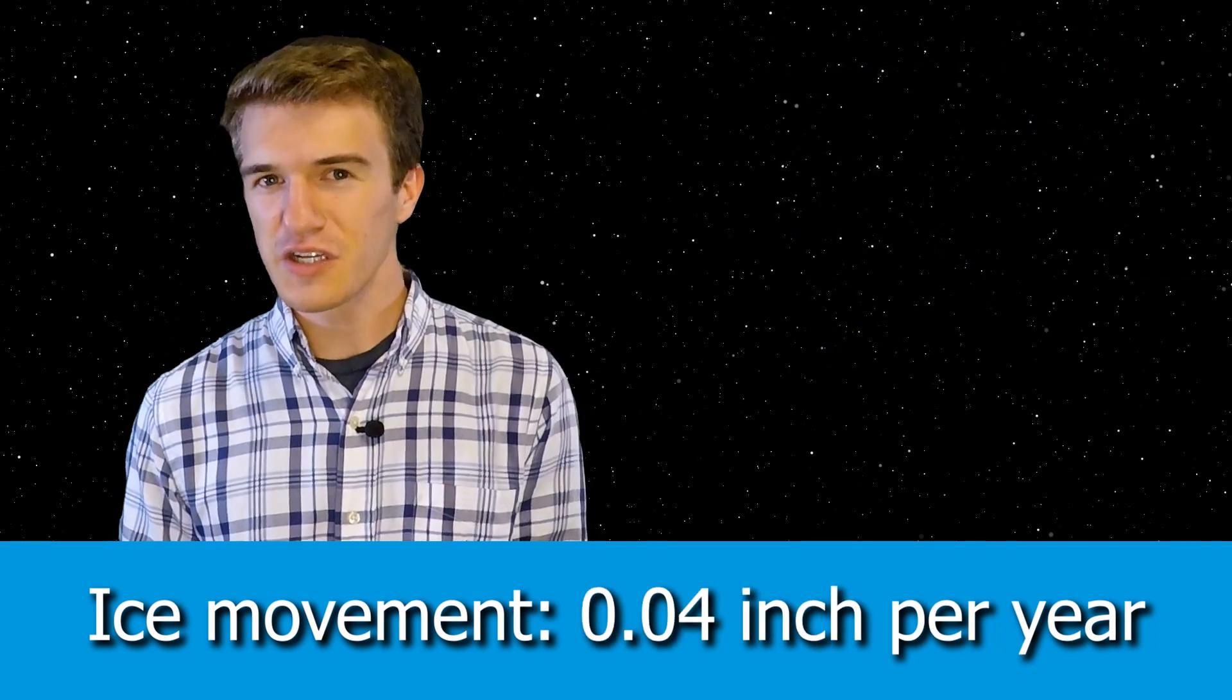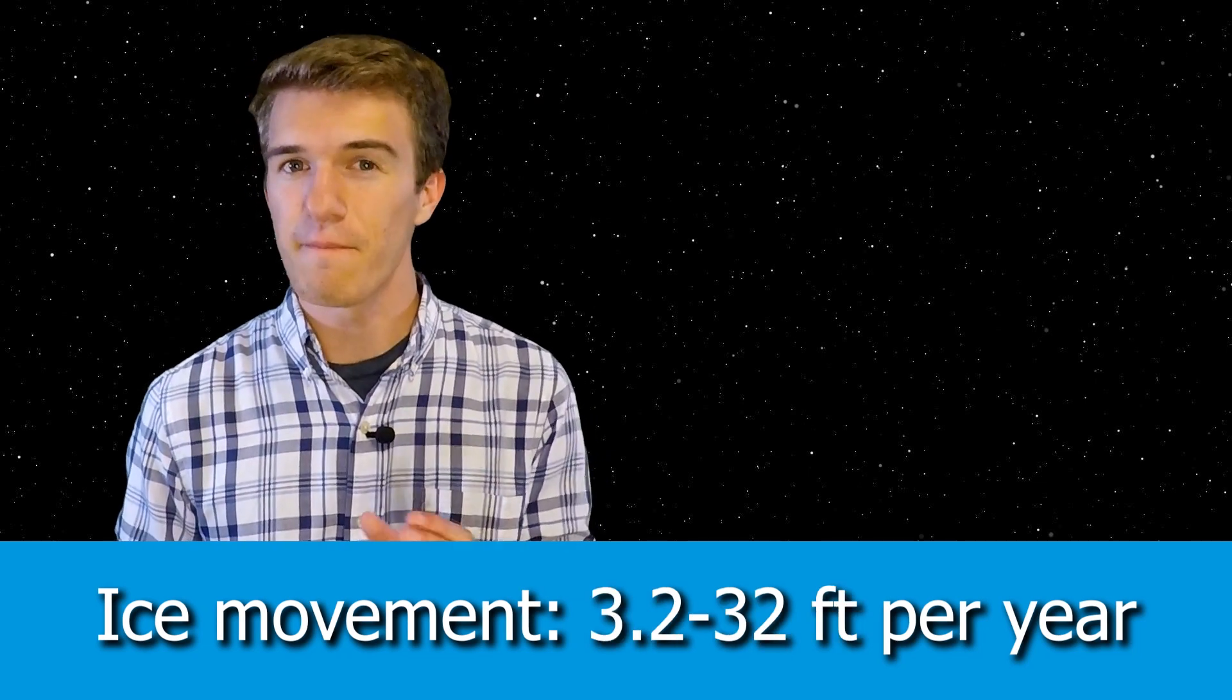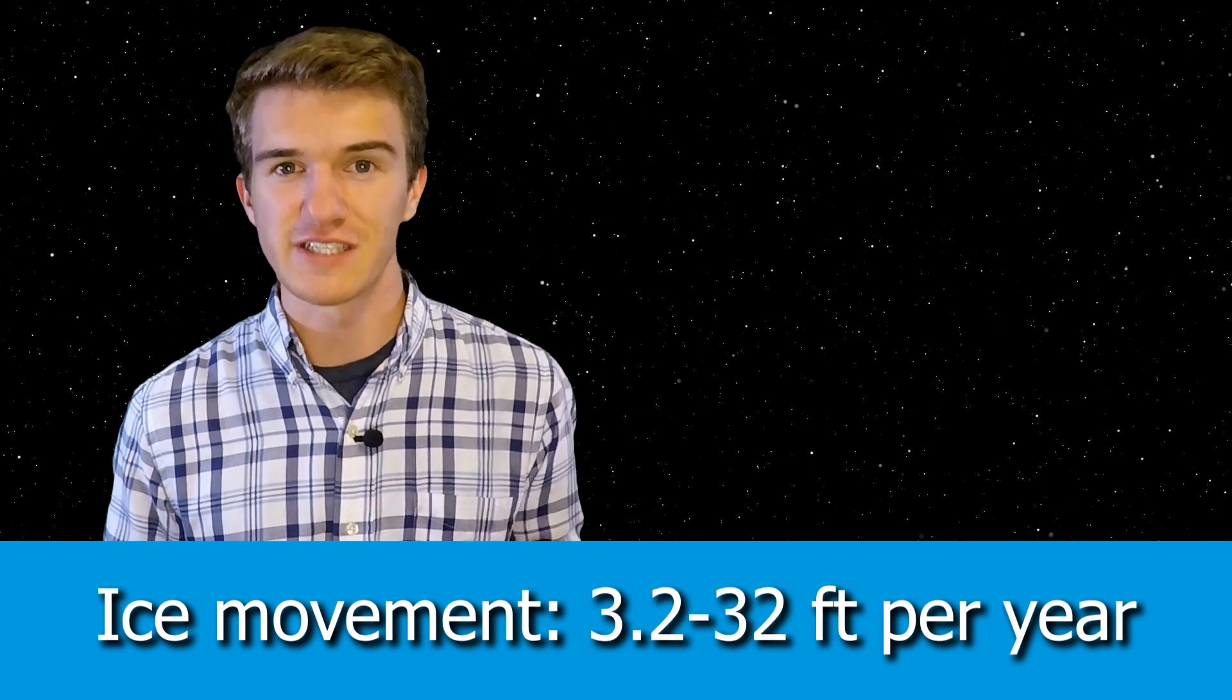Whereas here on Earth, glaciers usually move at about 1 to 10 meters. So it's quite a large difference, and that mainly has to do with the difference in temperature between what we see here on Earth and what we see on Mars.